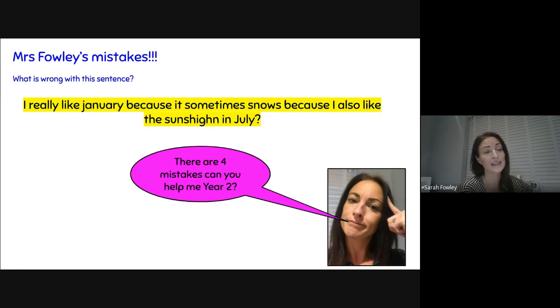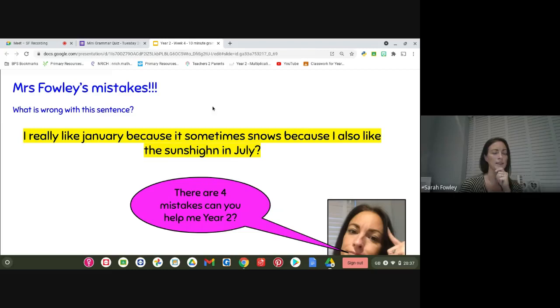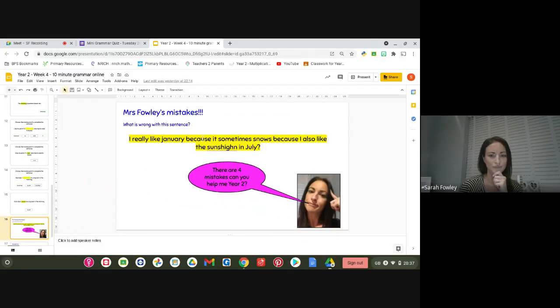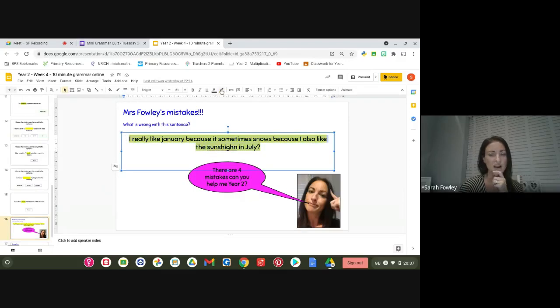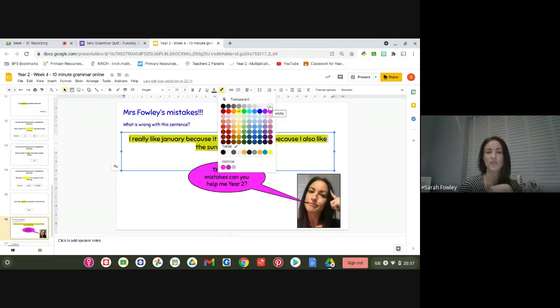Now it's time for Mrs. Foley's mistakes. I even made a mistake in one of the slides. We learned from our mistakes, guys. They're good. Remember that. So there are four mistakes today, guys. Oh dear. Let's see if you can help me. I really like January because it sometimes snows because I also like the sunshine in July. Let's see what my mistakes are.